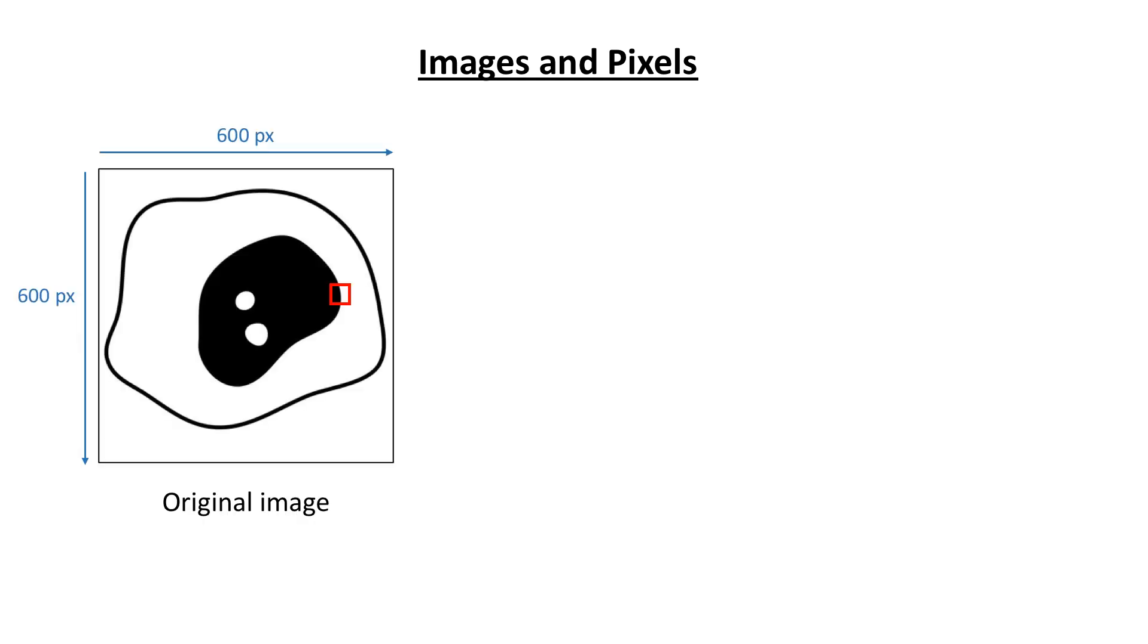Starting with some basic theory and the question what images are. Images are built up by pixels which contain information of how the image is represented. In this regard the resolution plays an important role. The higher the number of pixels the higher is the resolution. In our case the image has 600 pixels by 600 pixels.